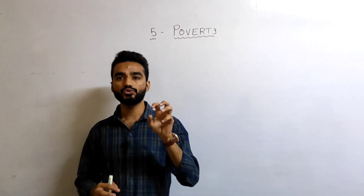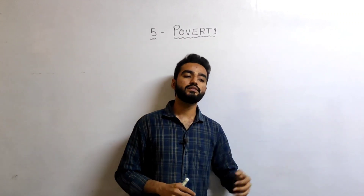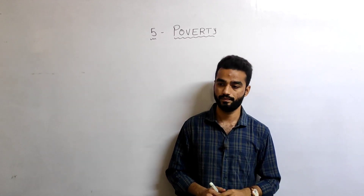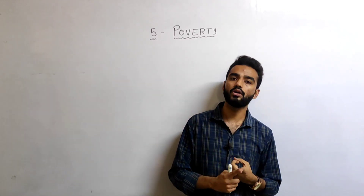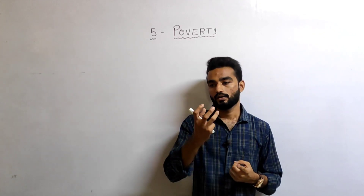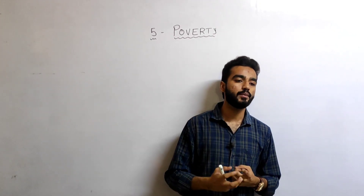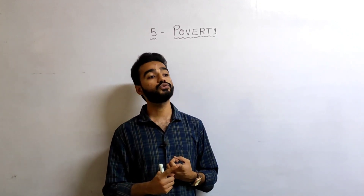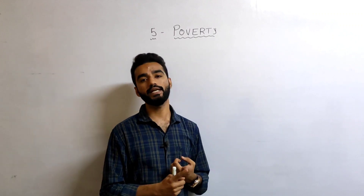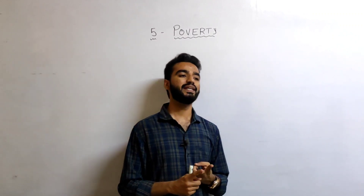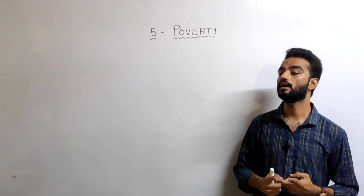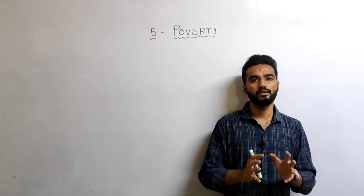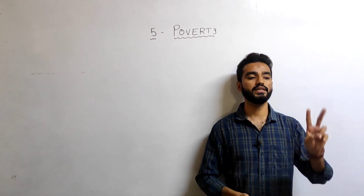What is the hindrance of our economy? It is related to the following chapters. This chapter is about poverty and the next chapter is Unemployment. So poverty is a very big hindrance — a very big loophole — you can say a very big reason for our economy's challenges.